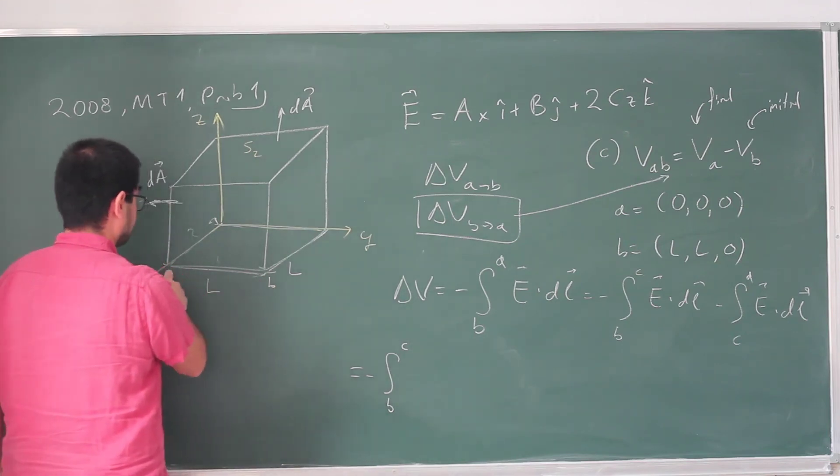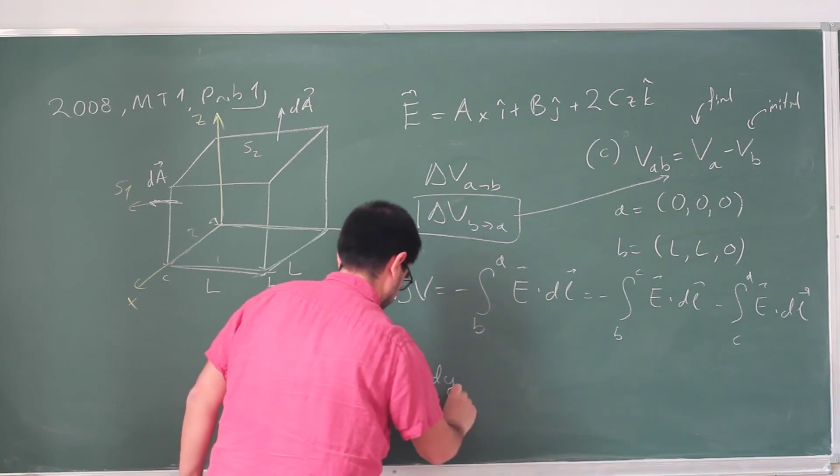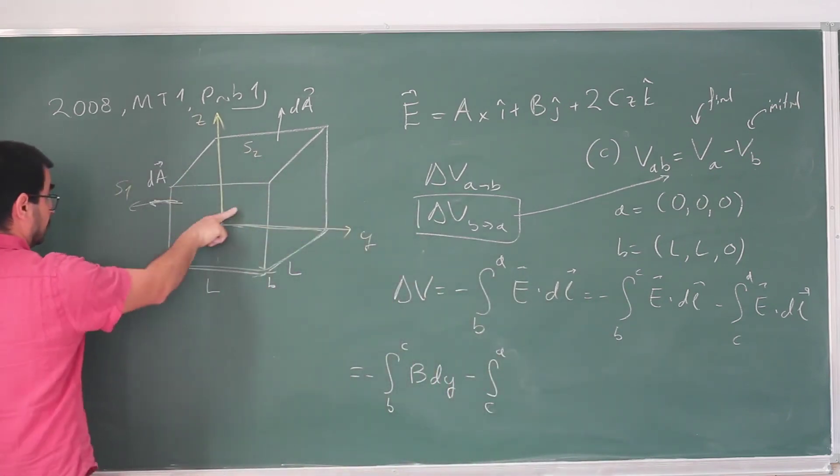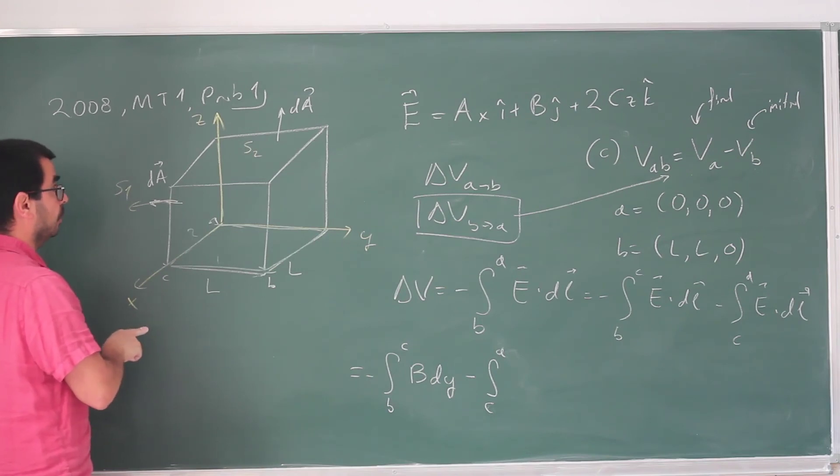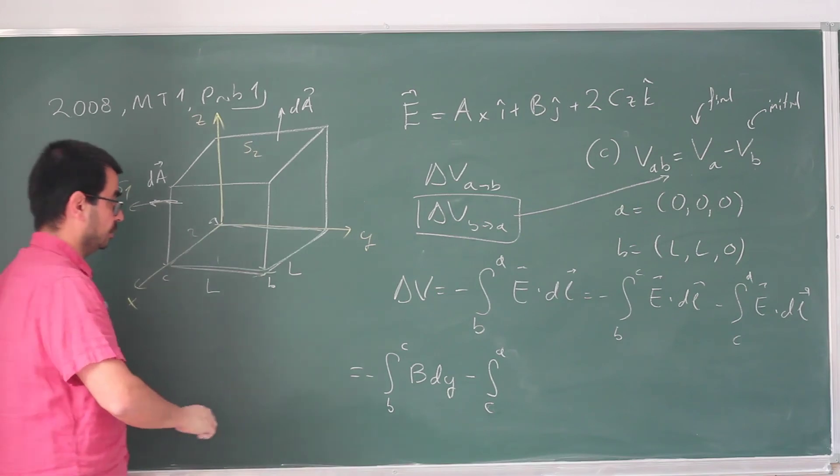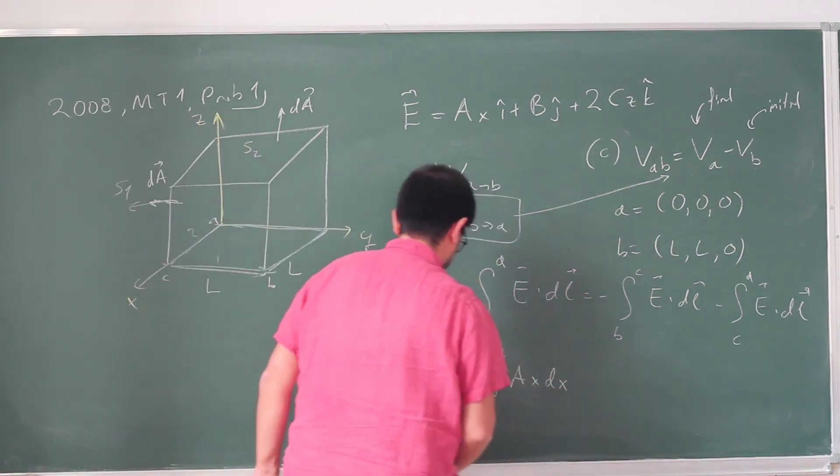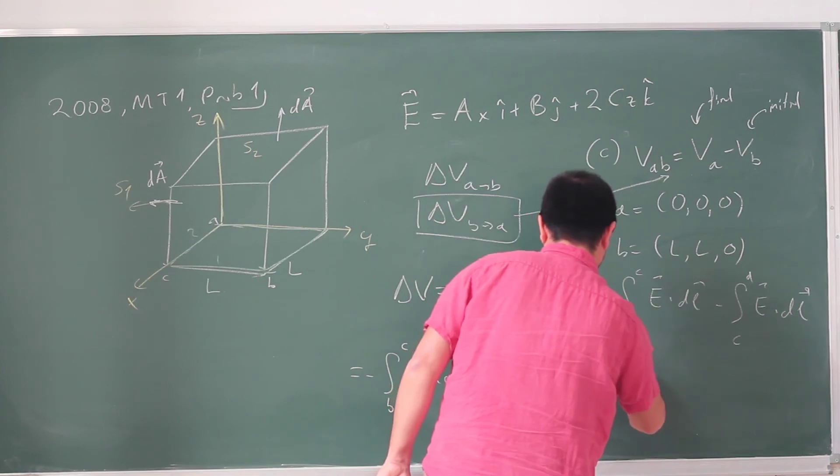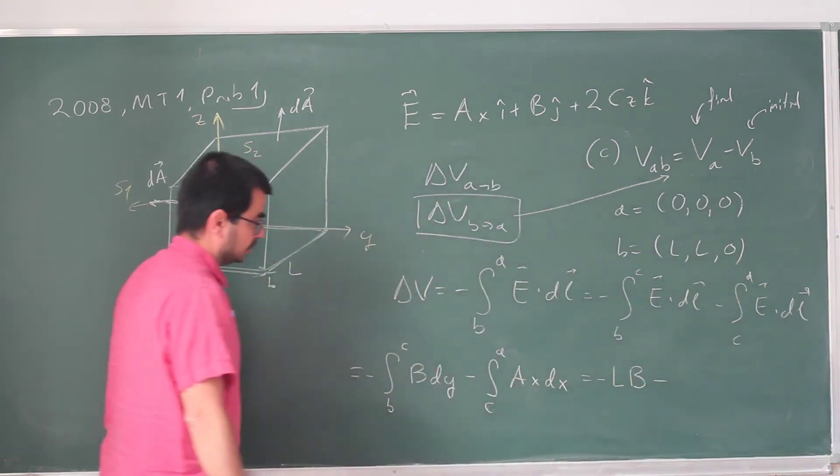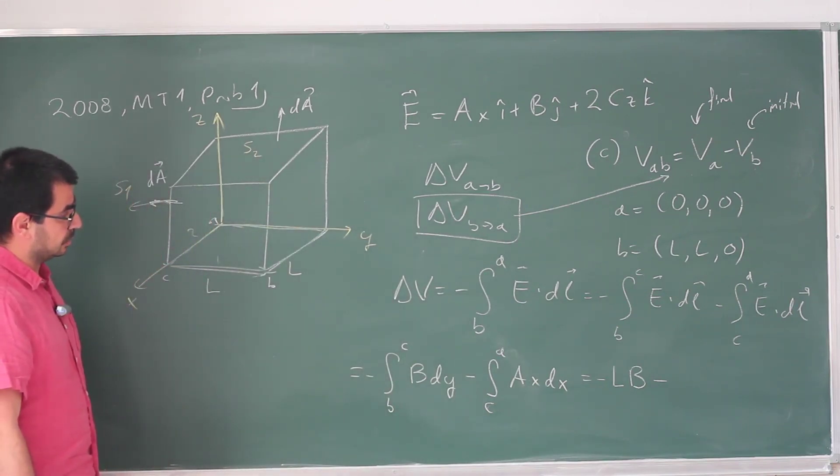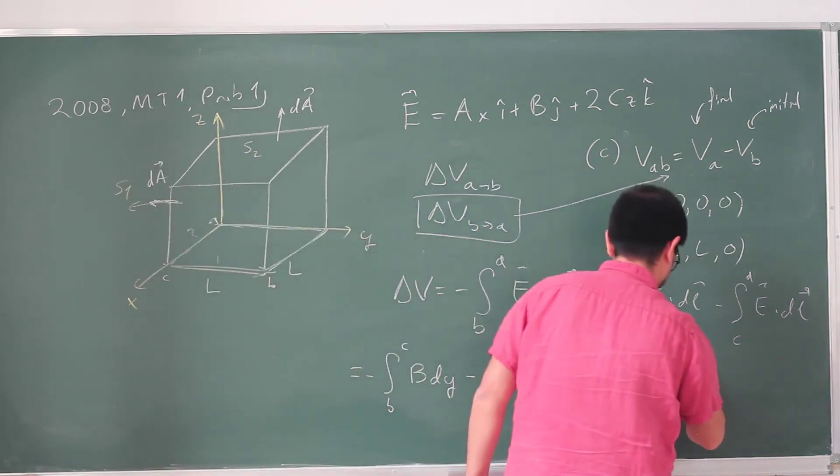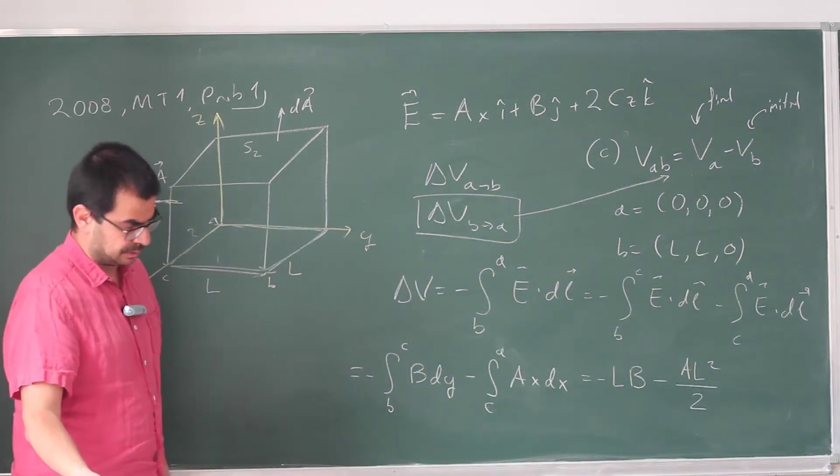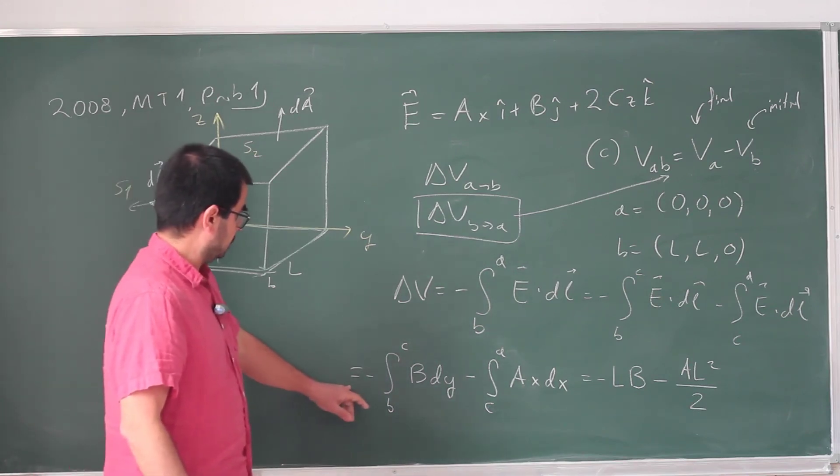So this is going to be B dy minus from C to A. I'm going along the x-axis. The only component of the electric field that's going to survive is the x component. This is going to be Ax dx. This integral is trivial, it's just L. So this is -LB minus... This integral is going to be x squared by 2. That's also L, L squared by 2. So AL squared by 2. And that is the potential difference going from B to A.